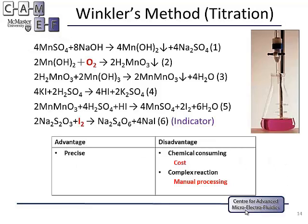First, the titration method. By following a series of chemical reactions, the dissolved oxygen concentration can be indicated when an iodide indicator changes color. This method is really precise. However, because of the complicated chemical reactions that require well-trained people to perform, and the chemical consumption involved, this method becomes really expensive.